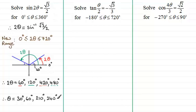So we now divide each of these answers by 2: 60 degrees divided by 2 is 30 degrees, 120 divided by 2 is 60 degrees, 420 divided by 2 is 210 degrees, and 480 divided by 2 is 240 degrees. Notice how when we're doing these questions we seem to go out of the original range, but then when we divide by 2 it brings us back into the range.